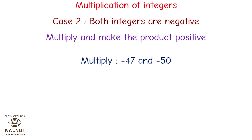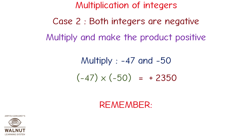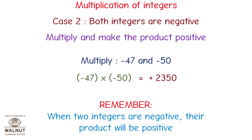Multiply minus 47 and minus 50. Minus 47 multiplied by minus 50 is equal to plus 2350. We multiply the numbers directly and get the answer. Since both numbers are negative, the product becomes positive. Remember, when two integers are negative, their product will be positive.